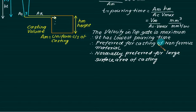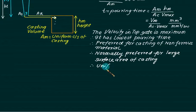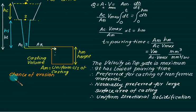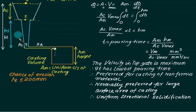The pouring time is very small, so we can achieve unidirectional solidification. However, there are disadvantages: the velocity is very large, so the chance of erosion is always there. Also, for the top gate the total height hc + hs is restricted to 200 mm because of erosion chances.